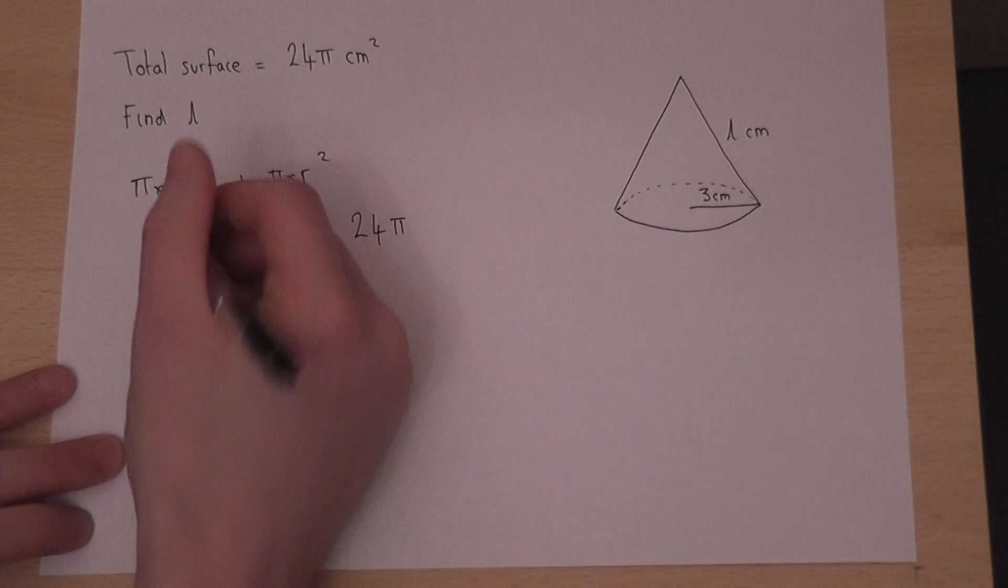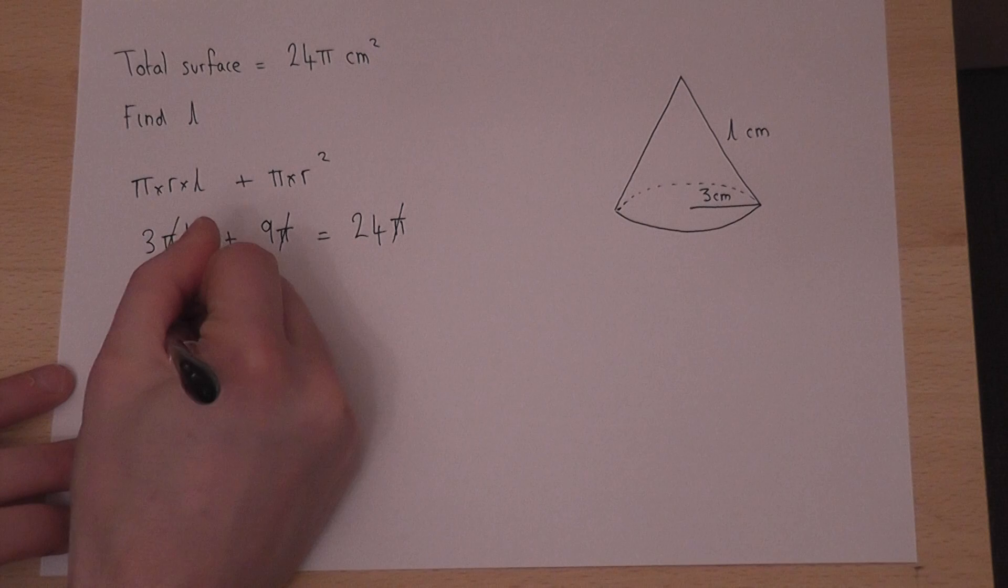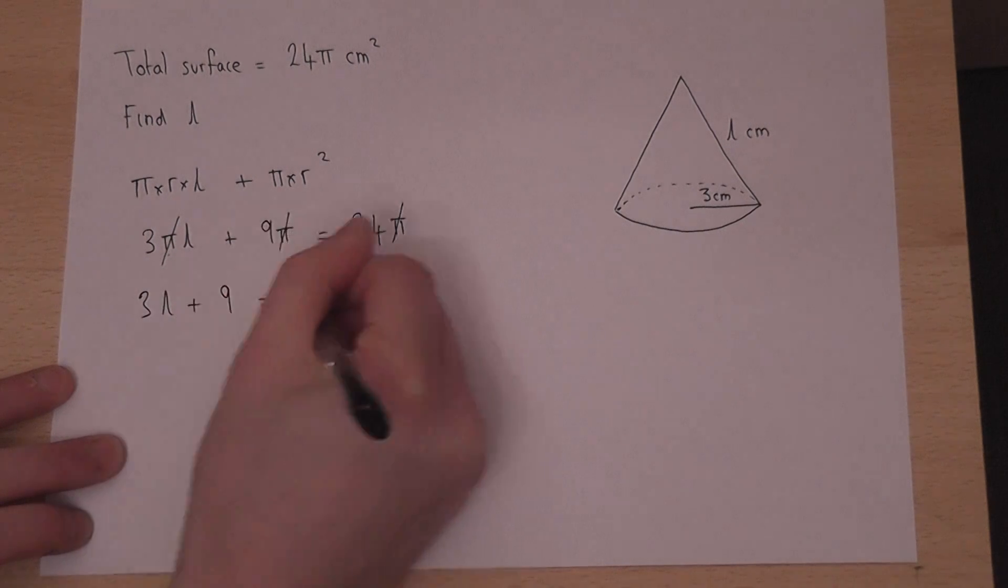To begin with, there's a π in all the terms, so I can cancel all those out. I'm therefore left with 3L plus 9 equals 24.